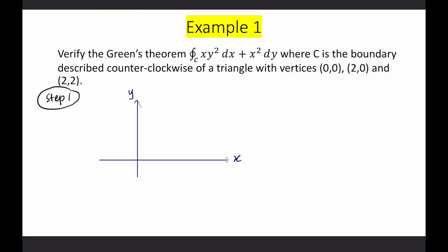Let's look at Example 1: Verify Green's Theorem, where C is the boundary described counterclockwise of a triangle with vertices (0,0), (2,0), and (2,2). Step one: draw the triangle curve.